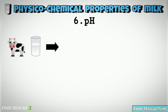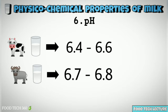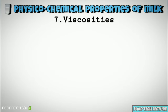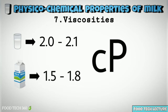pH: The pH of normal, fresh, sweet milk varies from 6.4 to 6.6 for cow milk and 6.7 to 6.8 for buffalo milk. Viscosity: whole milk has a viscosity of 2.0 to 2.1 centipoise and skim milk contains 1.5 to 1.8 centipoise.